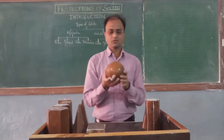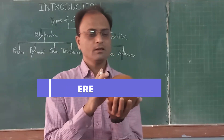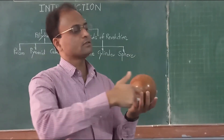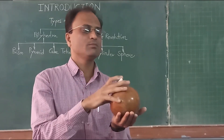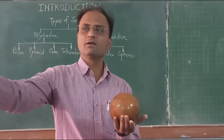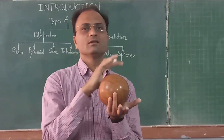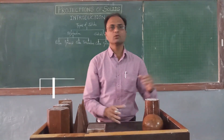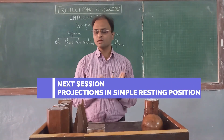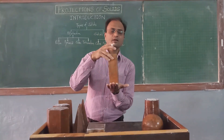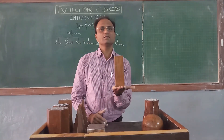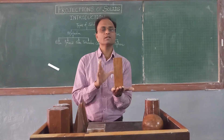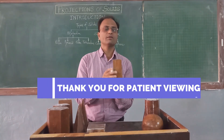The last solid of revolution is the sphere. A sphere is a solid that appears as a circle from any direction — front, top, side, or any oblique direction. This covers all the different types of solids. In the next session, we will study how to draw projections of a solid in a simple resting position, for example when a square prism is placed on its base on the HP.